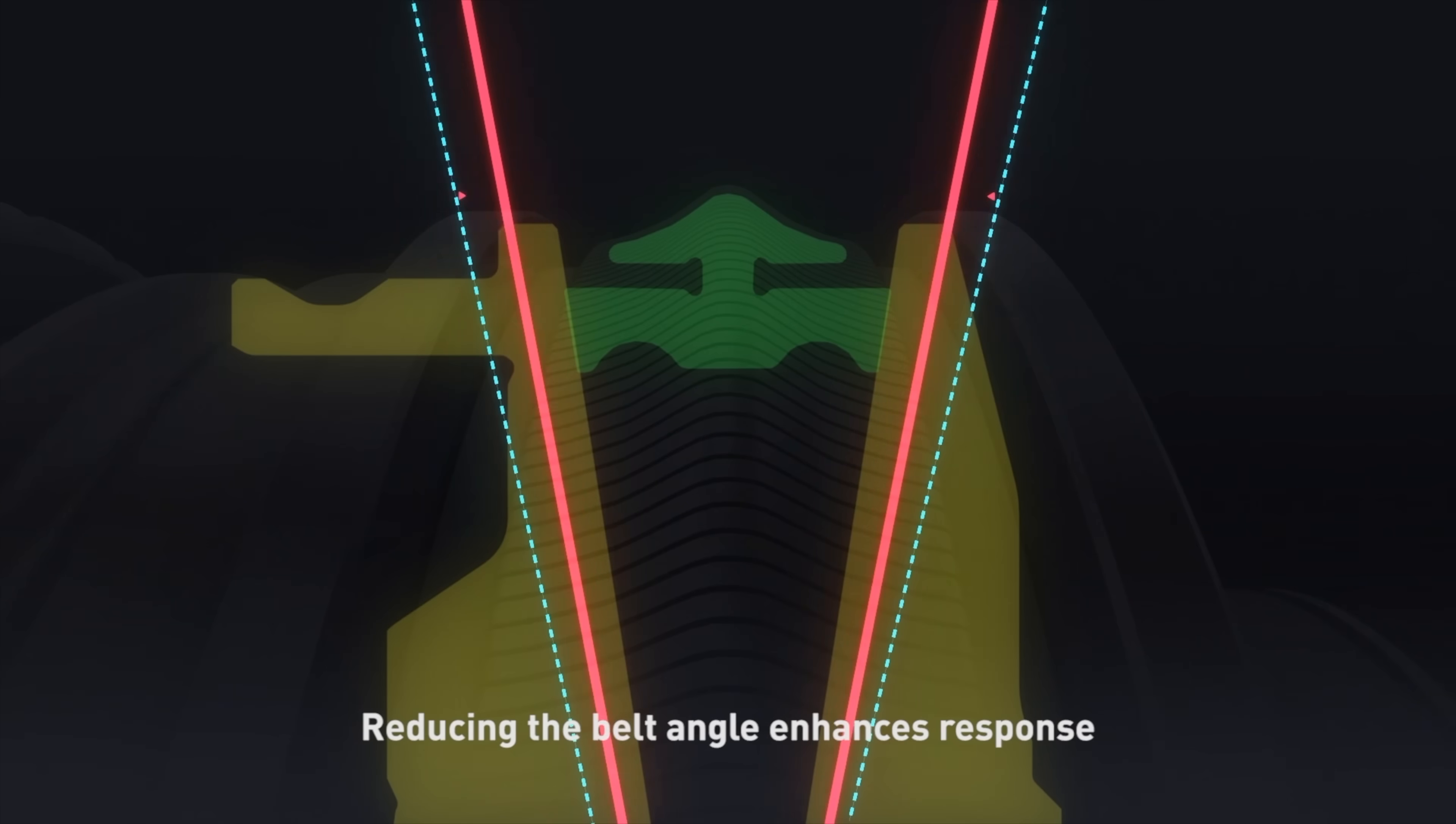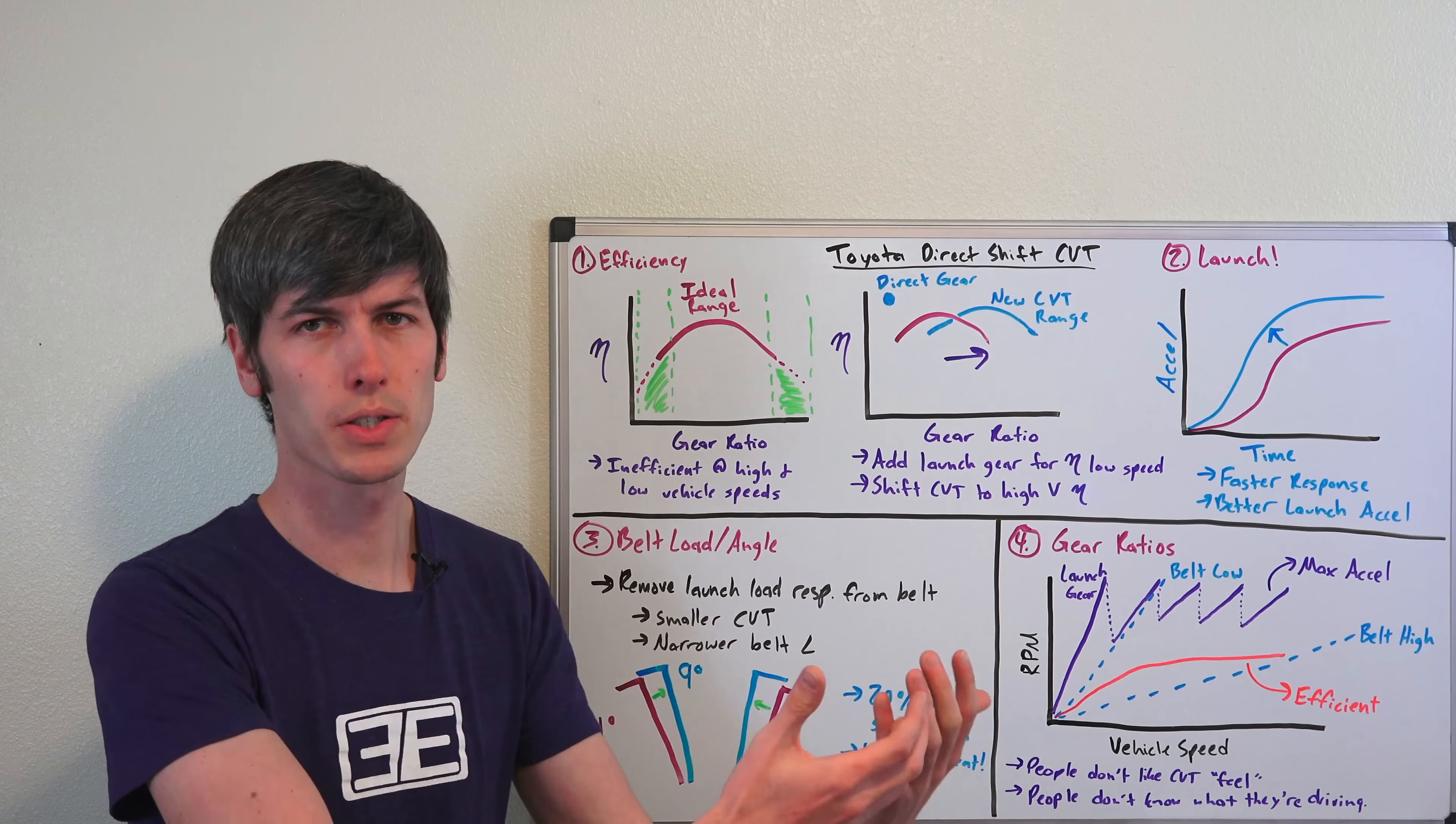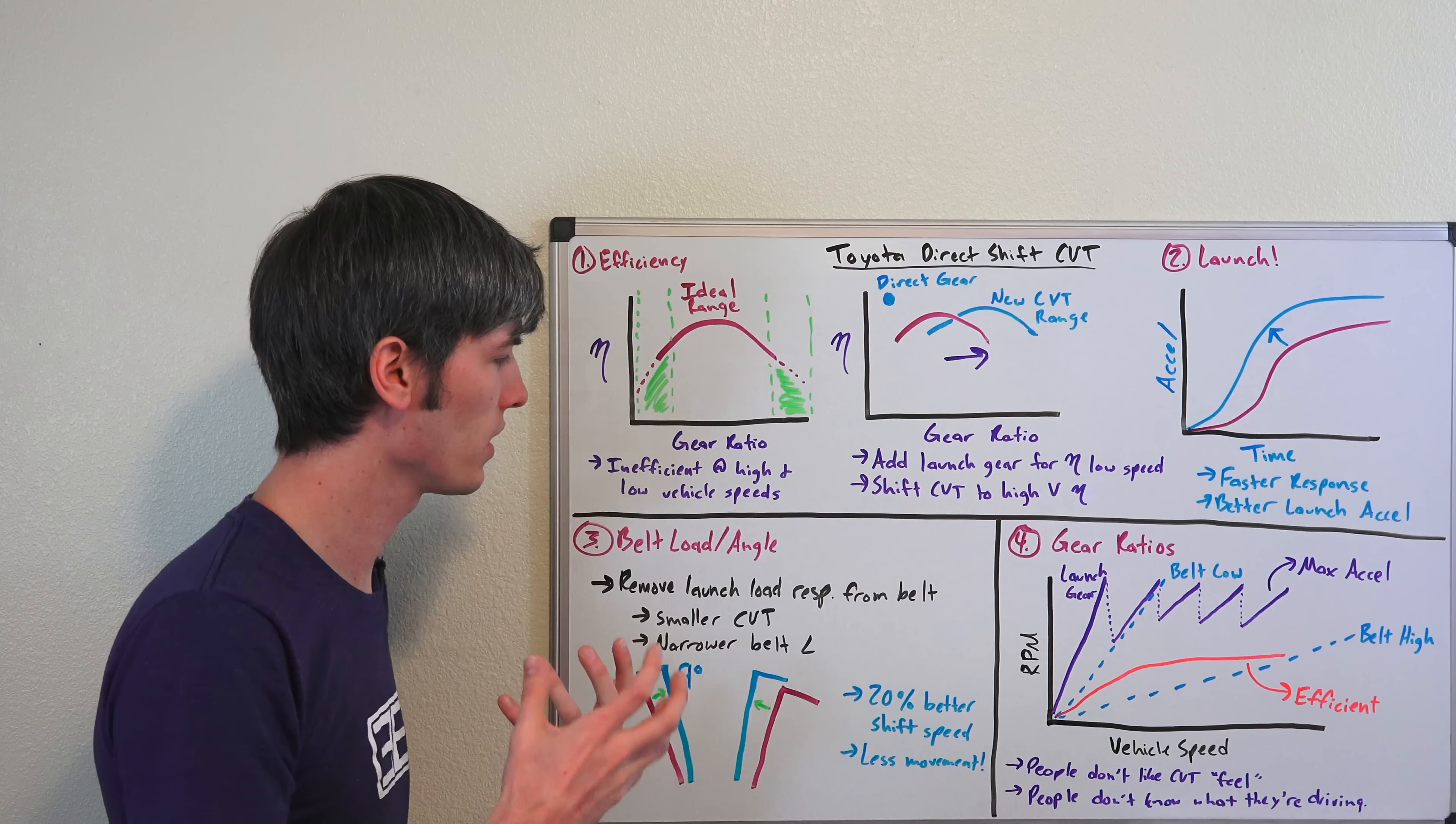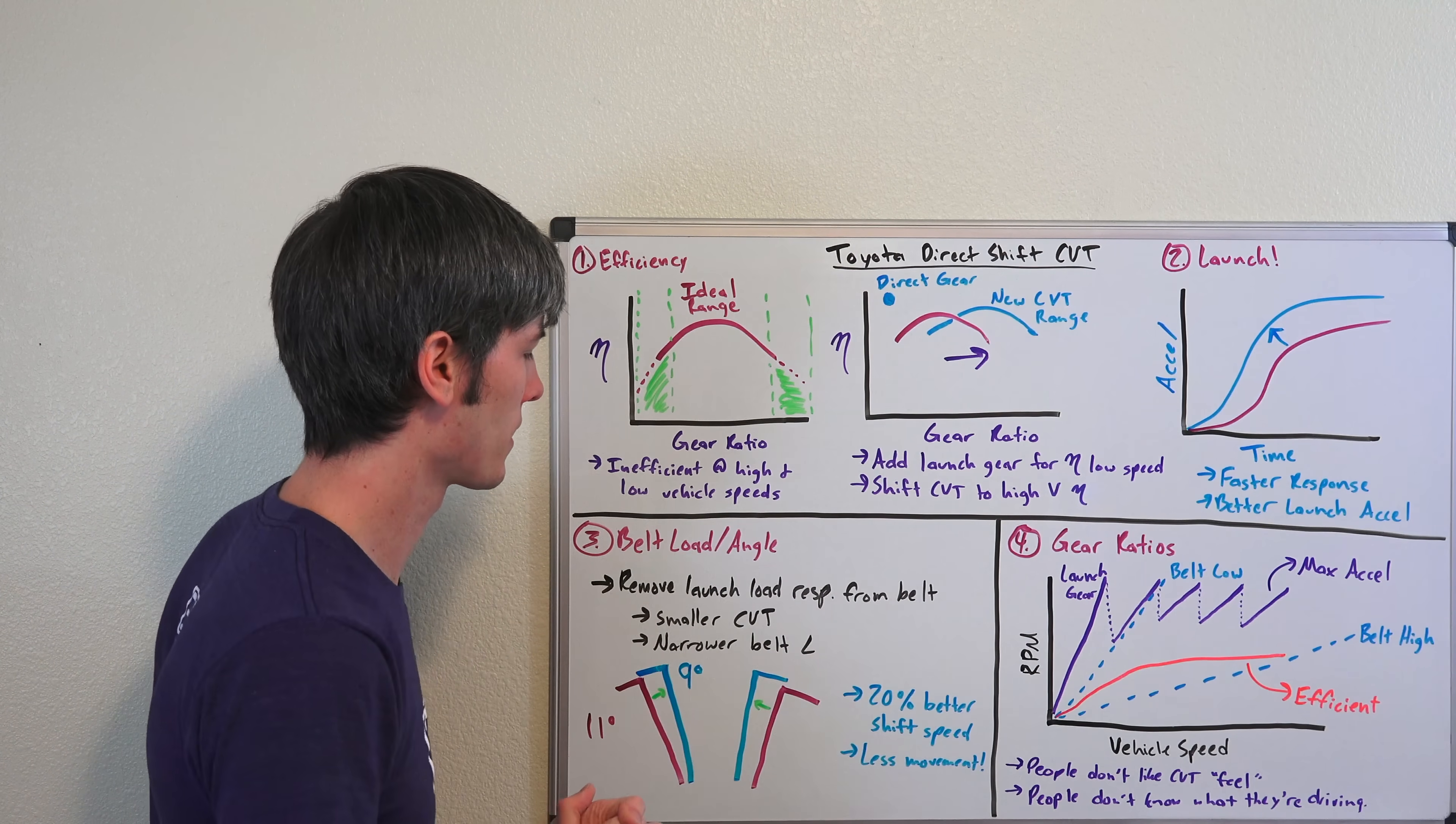Next we get into the belt angle used by the pulleys, and this is actually narrower, so it's gone down from 11 degrees to 9 degrees. So why were they able to reduce that belt angle? Well essentially this is because they're removing the responsibility of launching the car from a dead stop, and by removing that responsibility where the acceleration load is very high, and the torque transmitted through that CVT is very high from that initial acceleration, you're able to use a smaller CVT and a narrower belt, because it's no longer responsible for that really high torque application where you're initially accelerating the vehicle.